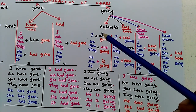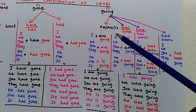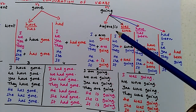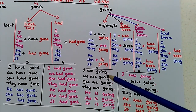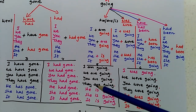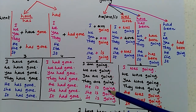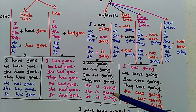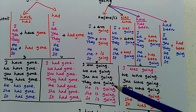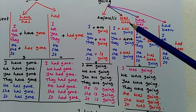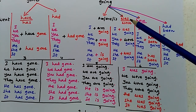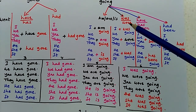First of all, let us add am, are, is. By doing so, we get the table: I am going, we are going, you are going, they are going, he is going, she is going, it is going. And then we can get another table by adding was or were.